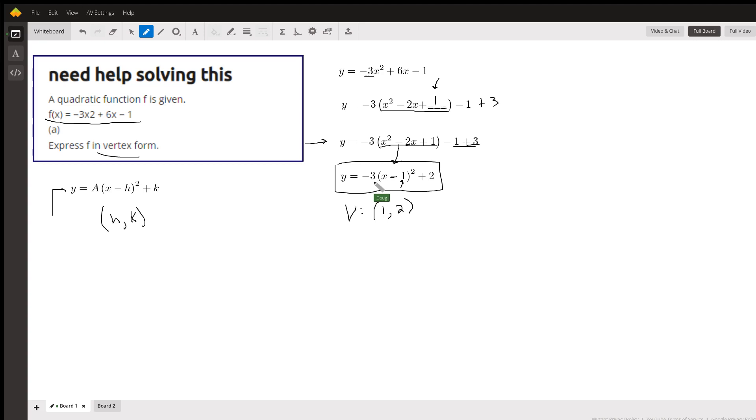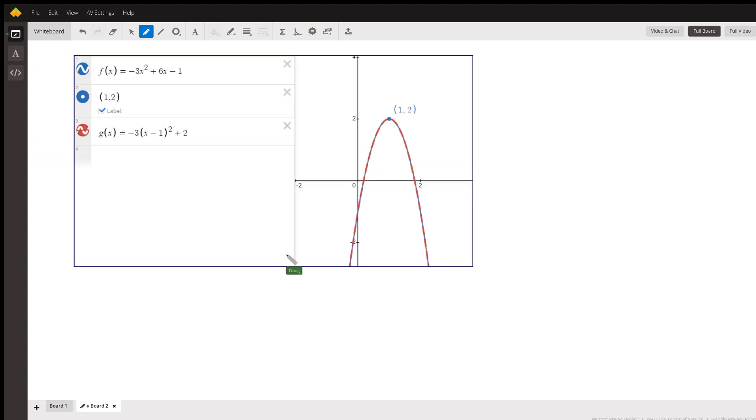The negative 3 in the front tells you that the parabola opens downward. And it makes it a little bit skinnier than the standard parabola, y equals x squared. Here's what it looks like.